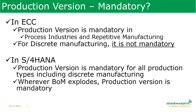Coming back to production version — it can also be quantity-range specific. For example, you can create a production version for quantities between 1 to 1000 pieces and another for quantities more than 1000 pieces. In the old line you produce small quantities, and in the bigger automated line you produce more. Production version can also have a validity period — for example, one production version valid January to March, another valid April to June — based on seasonality, nature of production, or humidity differences. So production versions allow multiple combinations of dates, quantities, BOMs, and routings.